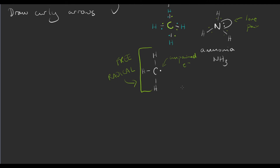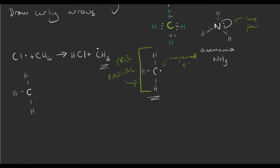That unpaired electron really wants to react with stuff. It can start off the river of electrons that flows through molecules to join them together or break them apart. For the syllabus, all you need to know is that if a molecule has a dot on it, it's a free radical. For example, here's the reaction of a chlorine free radical with methane: Cl• + CH4 gives you HCl and CH3•. The radical has moved from the chlorine onto the methane molecule.